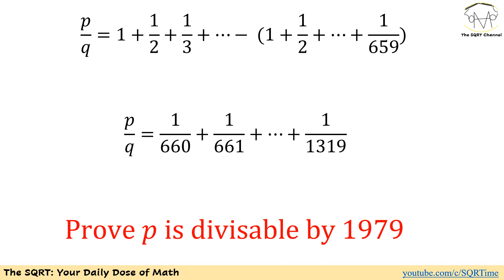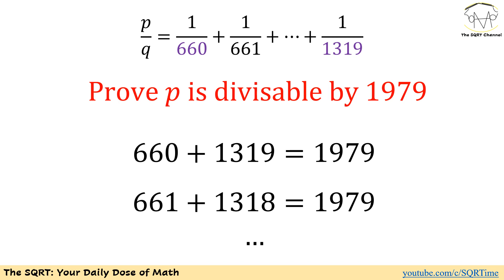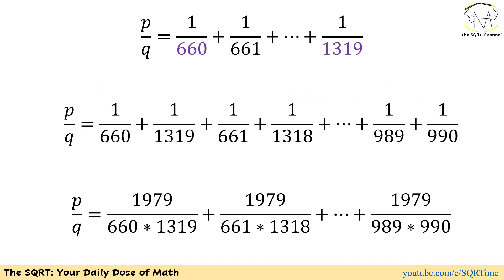...and so forth until we have plus 1 over 1319, and remember we want to prove that P is divisible by 1979. The key observation is that if we add 660 and 1319 we get 1979, and similarly if we add 661 and 1318 we also get 1979. So what we are going to do is pair these terms together — the first term with the last term, the second term with the second-to-last term, and so on — to simplify further.